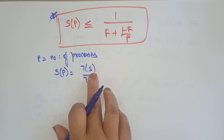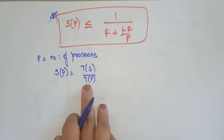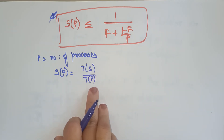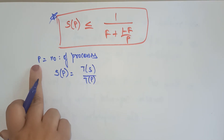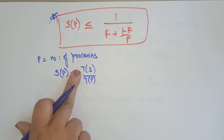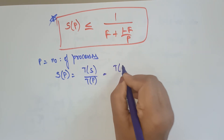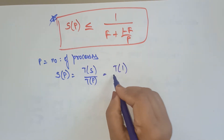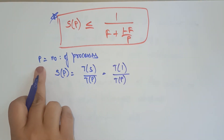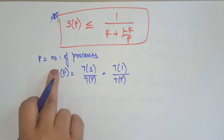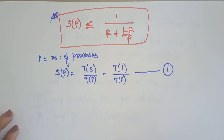Here N is nothing but P — the number of processors. So you can also write it as T(1) divided by T(P), because in place of N I am taking P, that is the number of processors. Call this equation 1.